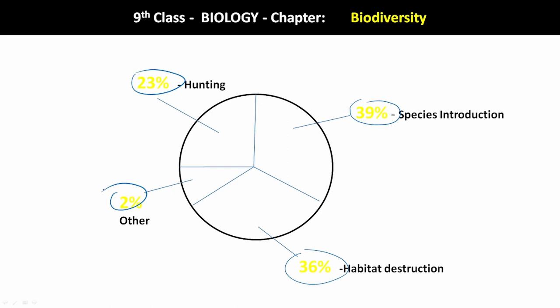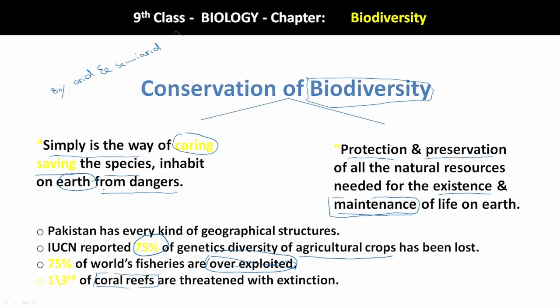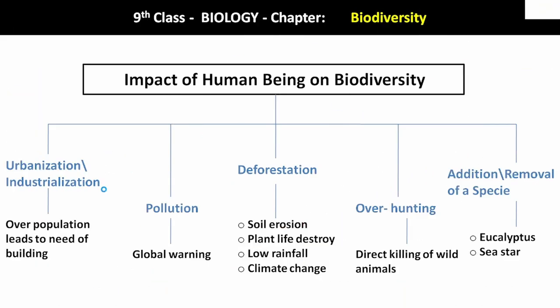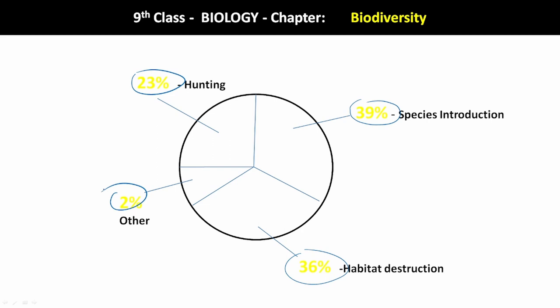These are some factors which are destroying our biodiversity, and how serious it is that we are not paying enough attention. So what we learned today: conservation of biodiversity — definitions, some important points, in-danger and extinct species, impacts of human beings on biodiversity, and a pie chart summary. Thank you.